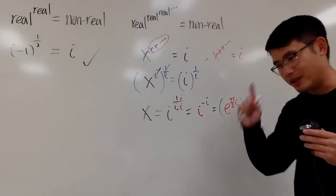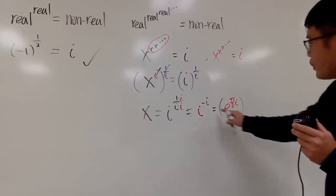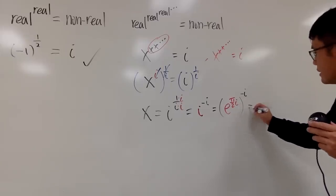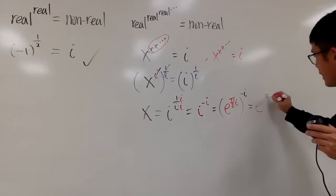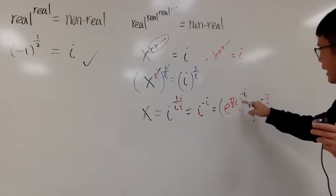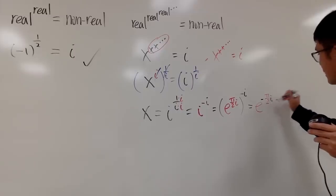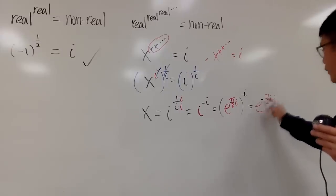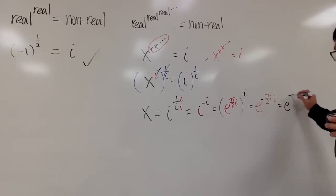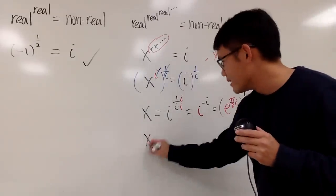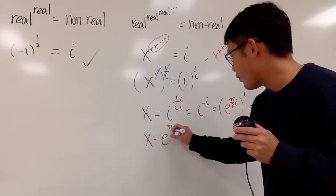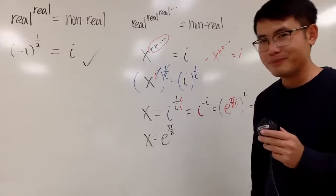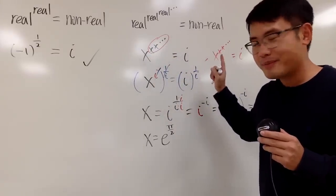Using the principal value, we have i to the negative-i power, and substituting the polar form gives e to the pi-over-2 times i, all raised to the negative-i power. Multiplying the exponents: pi-over-2 times i times negative-i. Since i times i equals i-squared equals negative one, and negative times negative is positive, we get e to the pi-over-2. So x equals e to the pi over 2.